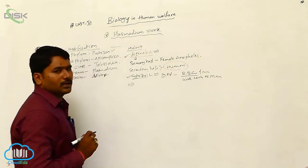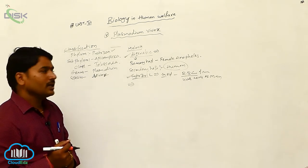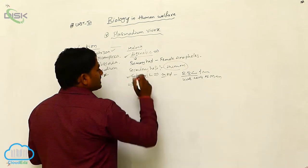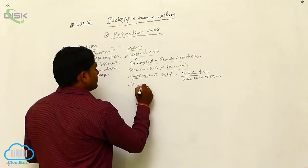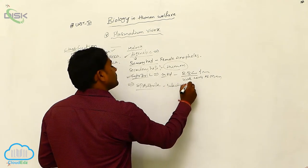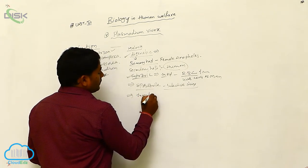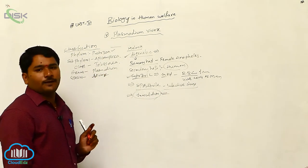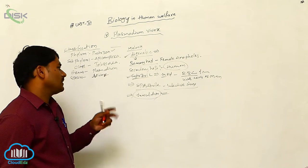It is cosmopolitan, distributed throughout many countries. It causes malaria disease. It is transmitted by the female Anopheles mosquito, and the infective stage is the sporozoite. Infection takes place by inoculation — the mosquito bite causes transmission of malaria disease.